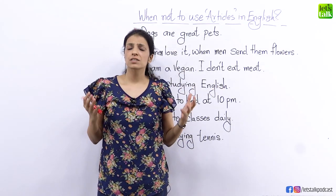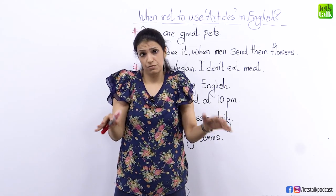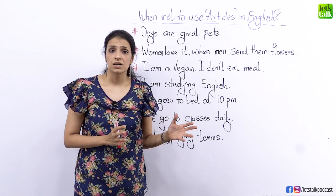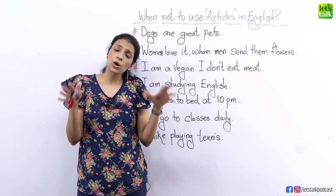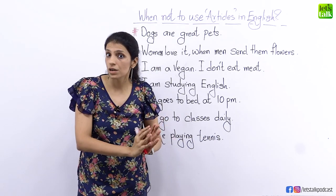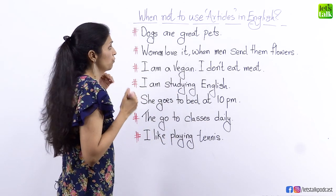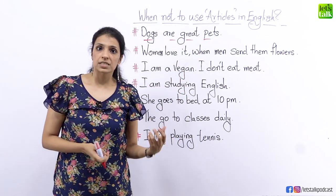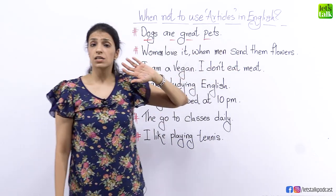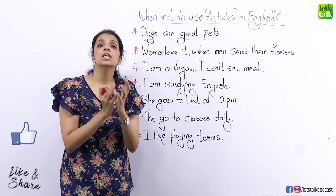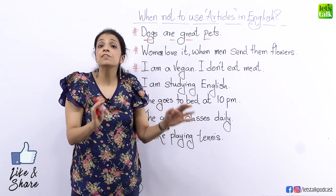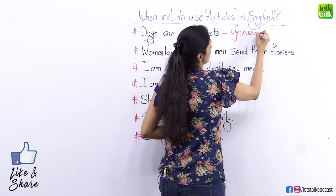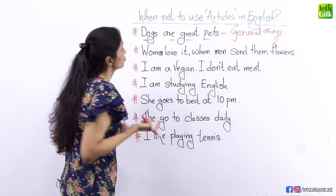When you have a general conversation and you are speaking about general facts — for example, 'Dogs are great pets' — that is a general statement. I'm not talking about a particular breed or type of dog. It's general. I do not use an article. We are not talking about a particular group of dogs; we are not defining or identifying. So remember: when you talk about general things, you do not use an article.